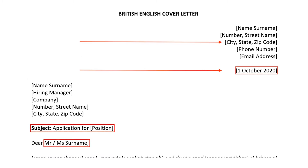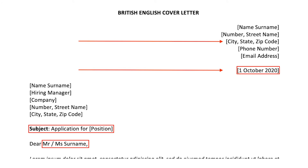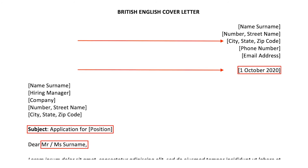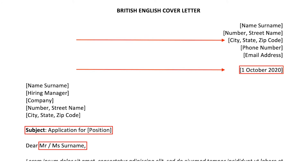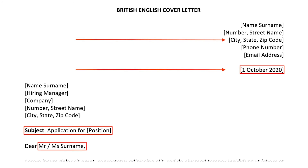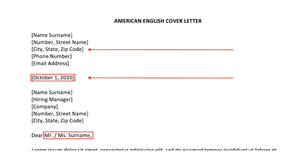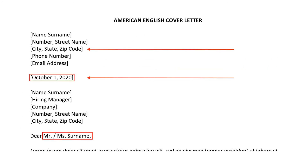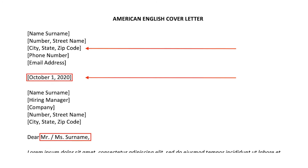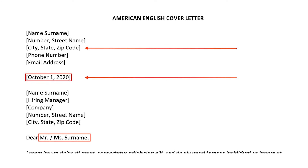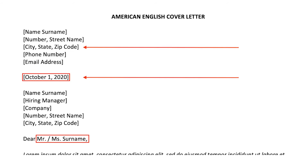For British English, you need to put the contact information and date on the right side. Then you put the day first, then the month, and exclude the comma. We also notice that the subject is included in the British English letter — it is commonly used in the UK but usually left out in the US. For American usage, the month is placed first, followed by the date, and you need to insert a comma between the day and year. We also include the dot after the abbreviation Mr. or Ms., while for British English you can leave it out.